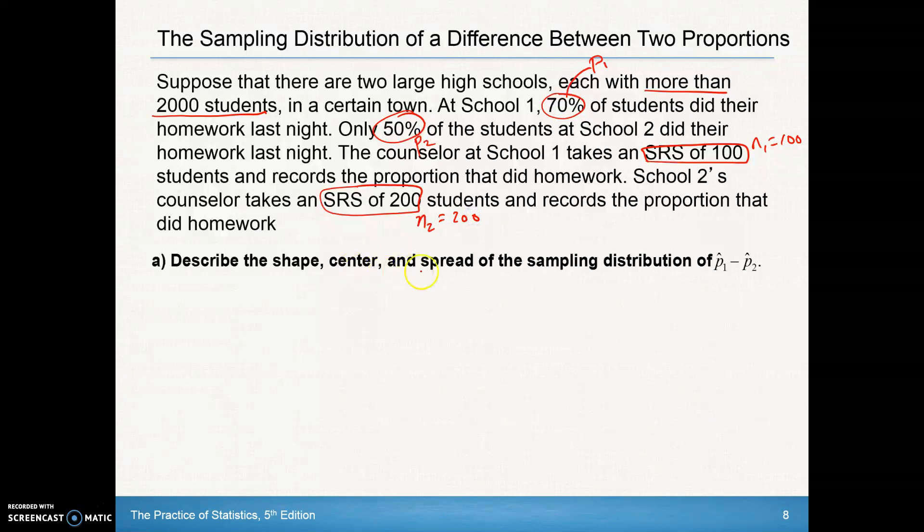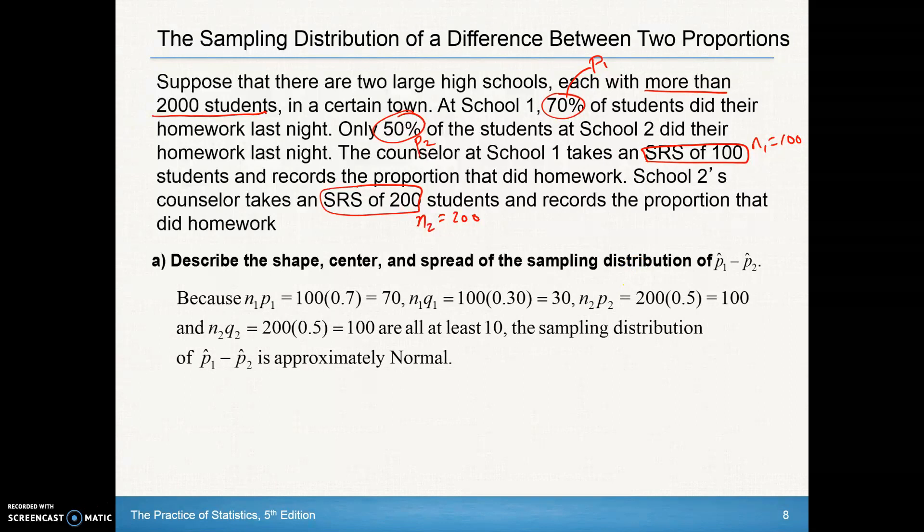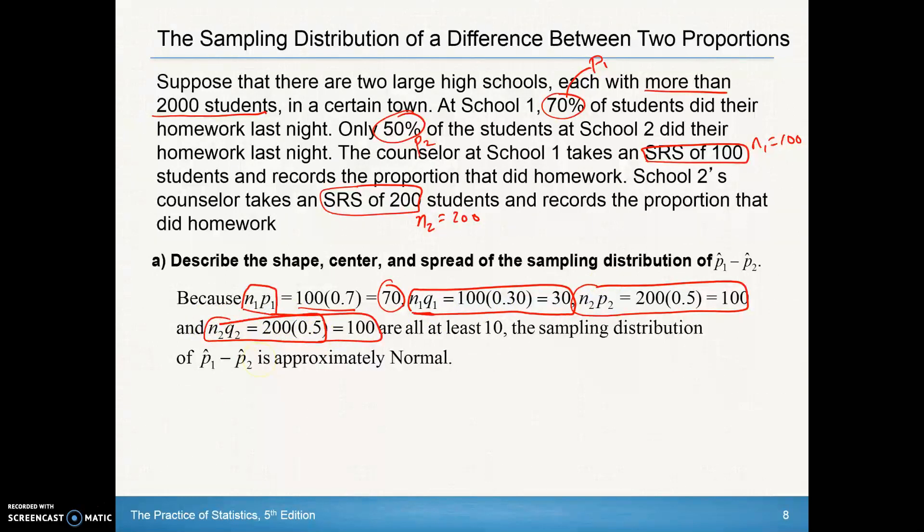To describe the shape, center, and spread of the sampling distribution, we test this. We take N1 times P1—there's our work to show in our final answer. Make sure you are showing this work, calculating it to the end. Calculate that for N1-Q1, N2-P2, and N2-Q2. What we notice is they are all at least 10, all greater than or equal to 10, so we've established normality.